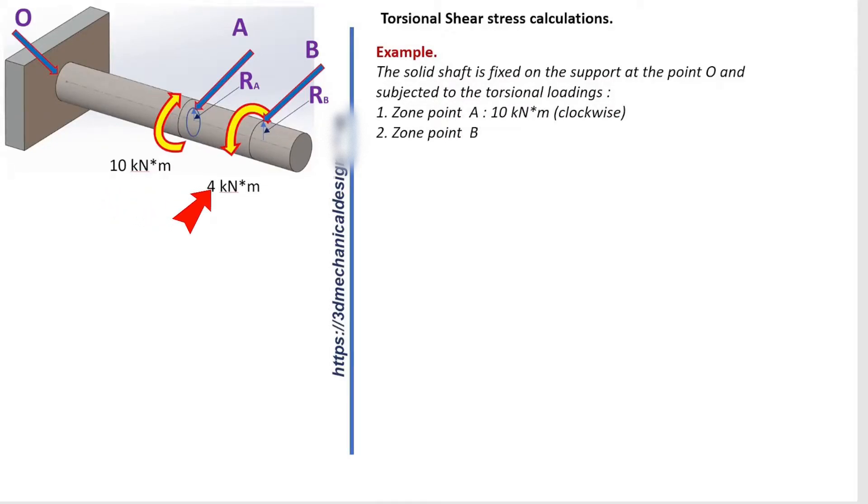Zone point B: 4 kN per meter, counterclockwise. Shaft diameter: 150 mm. Determine the shear stress at point A, RA equals 50 mm, and B, RB equals 75 mm.